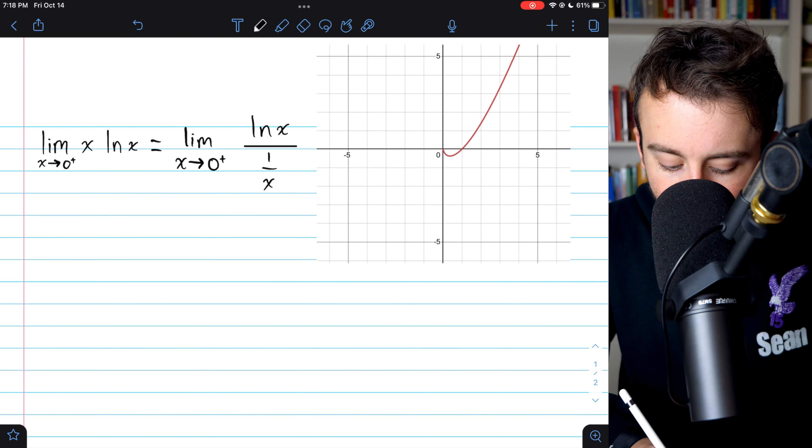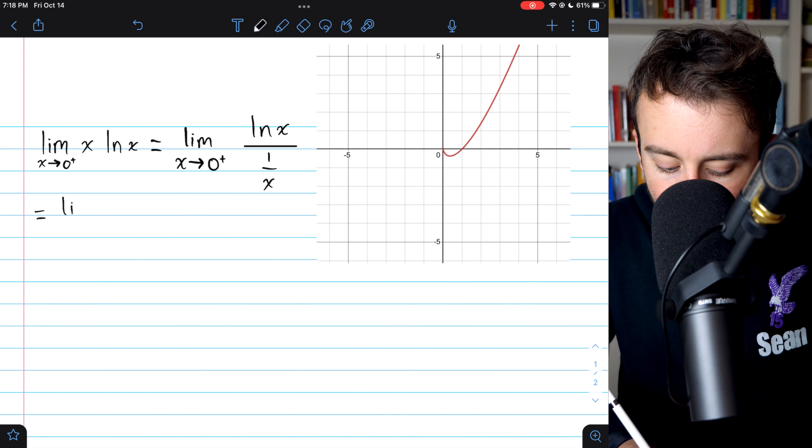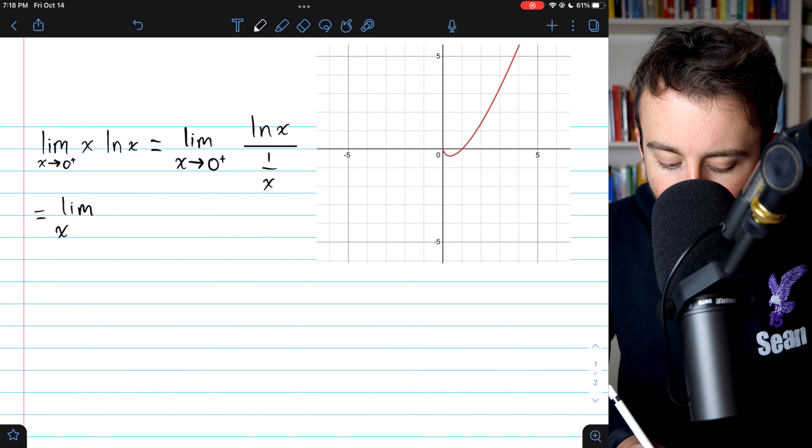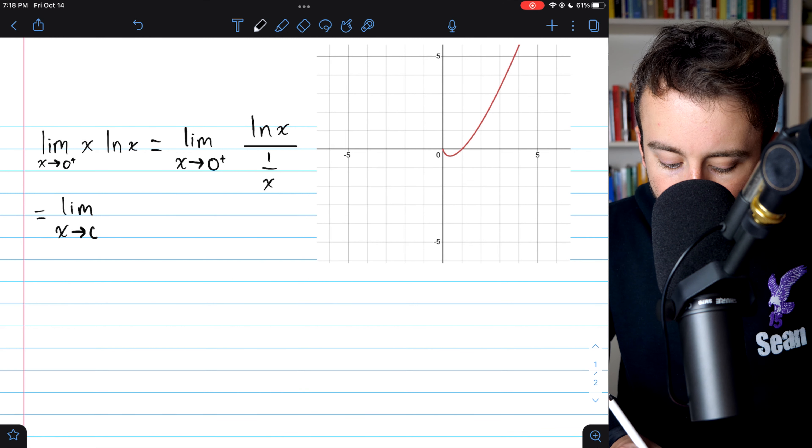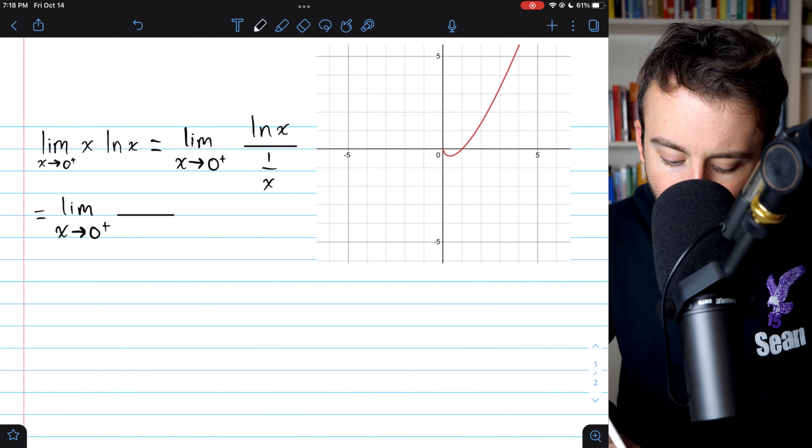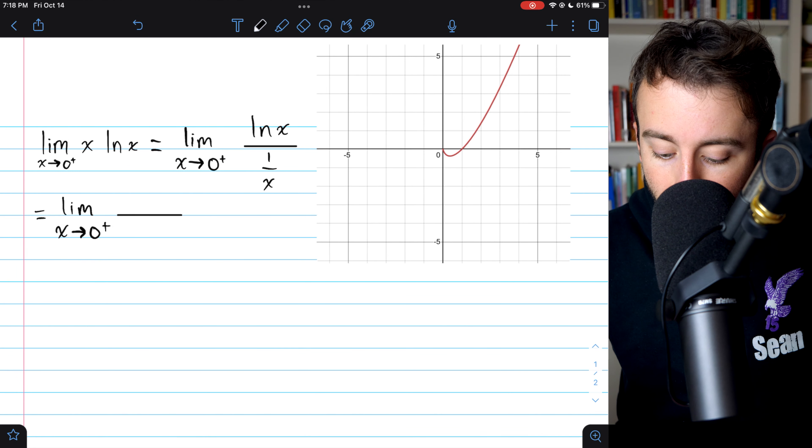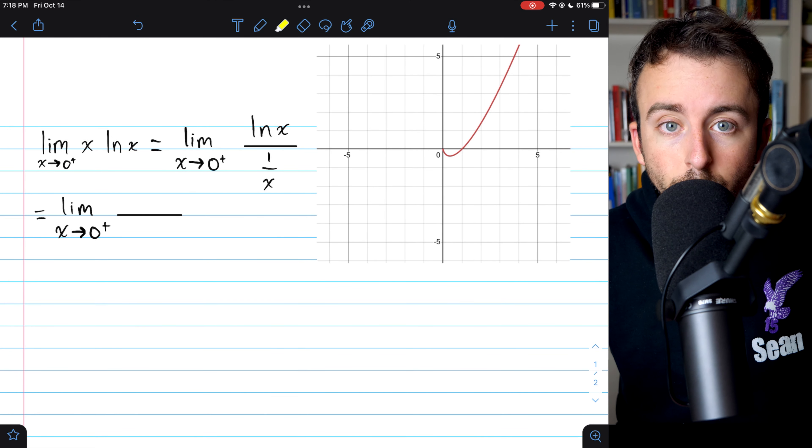So to evaluate this limit using L'Hopital's rule, instead of looking at this ratio of functions, we'll look at the ratio of their derivatives. So we'll need to take the derivative of the numerator and the derivative of the denominator. Remember that we do those separately when we use L'Hopital's rule.